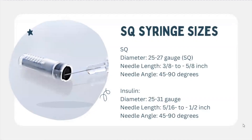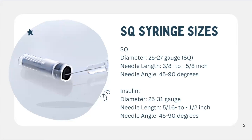Subcutaneous — we shorten that abbreviation by calling it SQ or sub-Q. There are different syringe sizes we're going to use for this. For heparin, we're going to use a syringe with a diameter of 25 to 27 gauge. The smaller the number, the larger the needle actually is, so the 25 is actually larger than the 27 gauge. The needle length is going to be three-eighths to five-eighths of an inch.